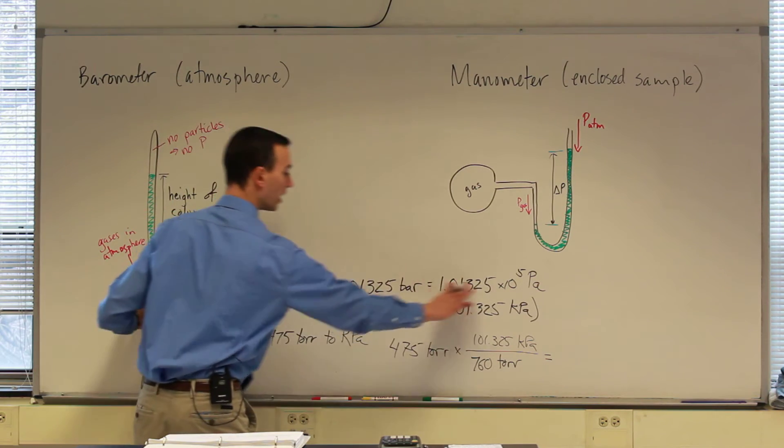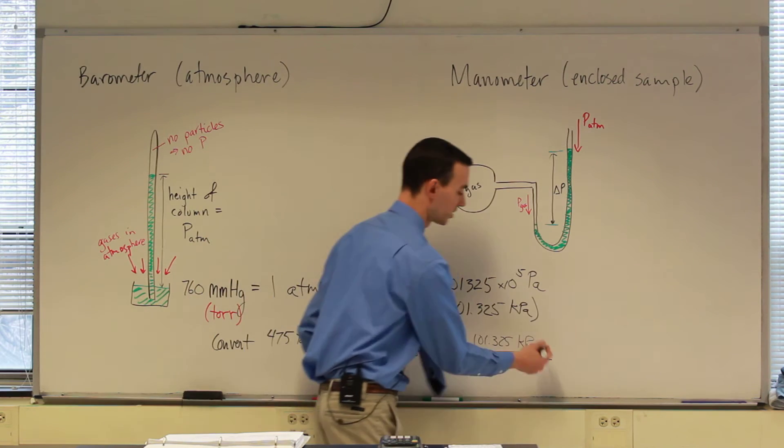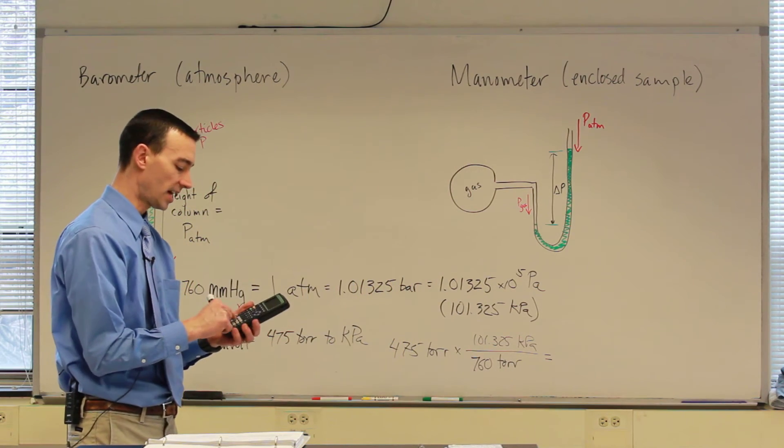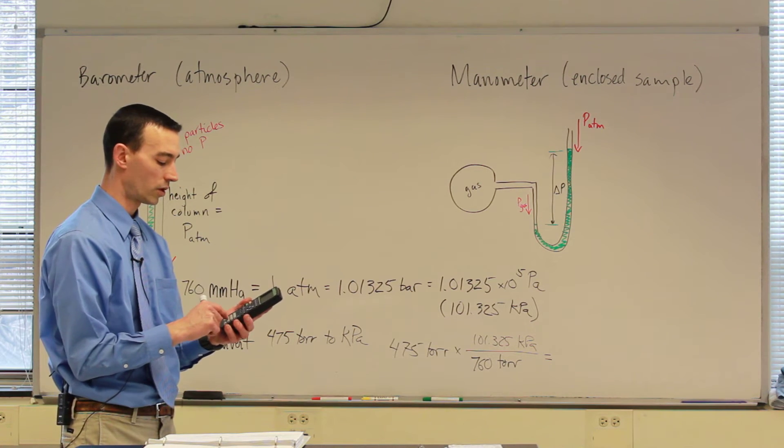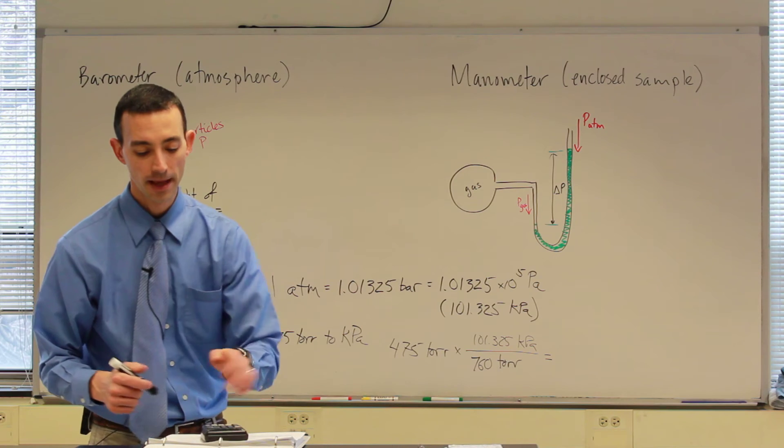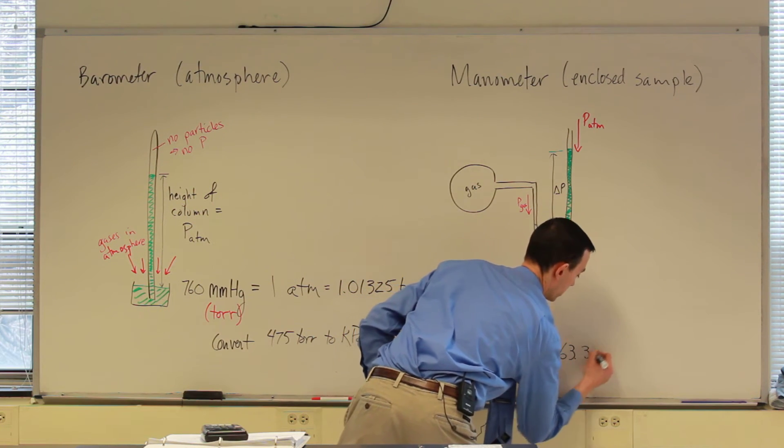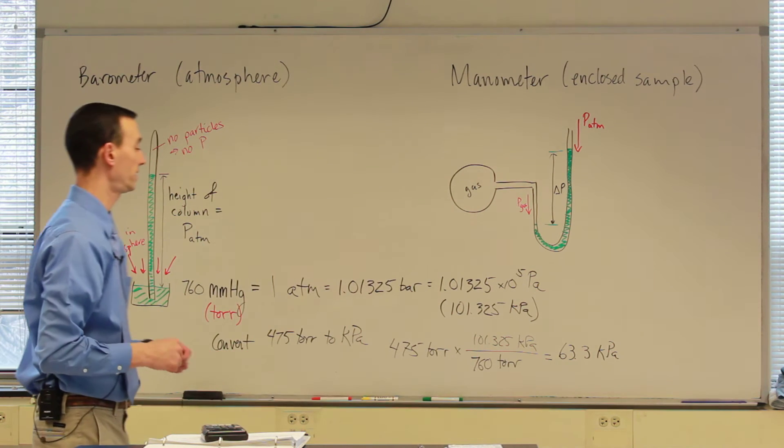Everything in this equality here is equal, so we can choose any two parts to make our conversion factor. And so we would need to just take our 475, divide it by 760, and then multiply it by 101.325. That is 63.3 kilopascals.